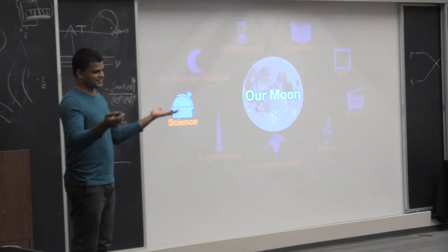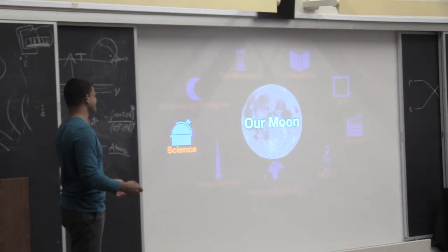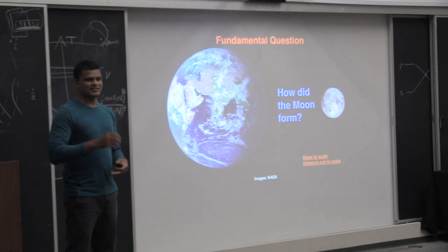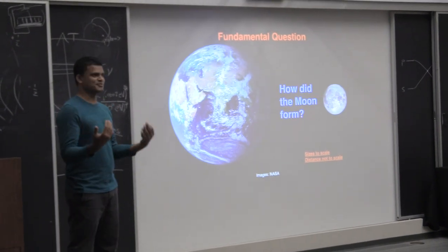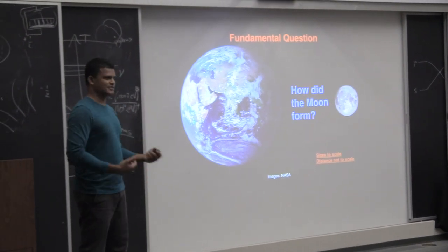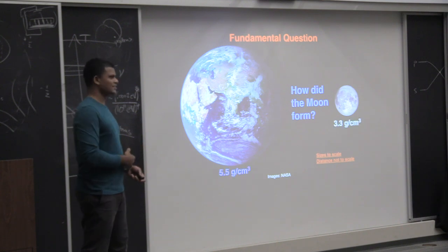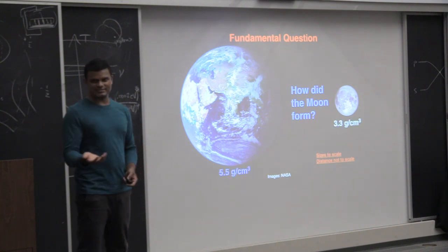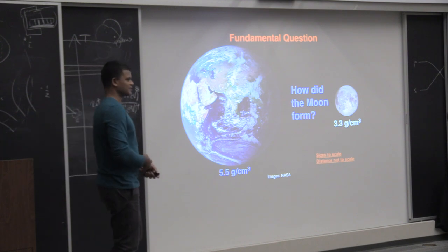For this talk, I'm going to talk about the science because that's probably what you're most interested in. I want to start with a very fundamental question: How did the moon get there? One way to start doing this is to look at basic information like density. The moon is less dense than the earth. So it's one of the clues we can use to figure out how the moon forms.